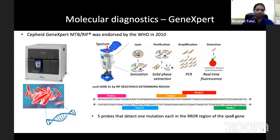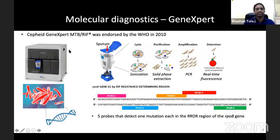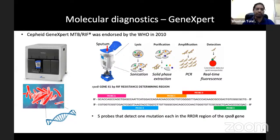There has been large-scale rollout of GeneXpert in India since then, but this instrument at its most subsidized rate costs around 18 lakhs. So this test for TB is still not a household test. All of this has a parallel in COVID — government resources were diverted toward COVID and we were able to scale up RT-PCR testing.